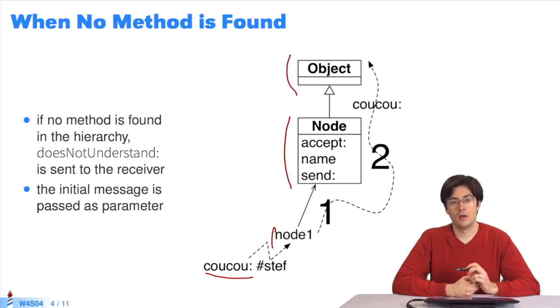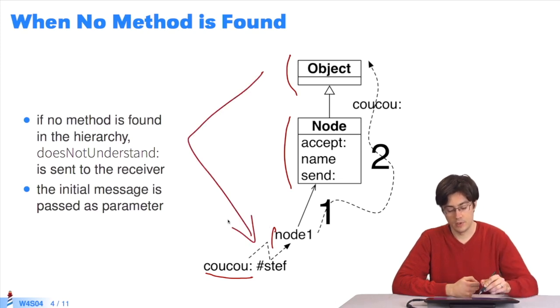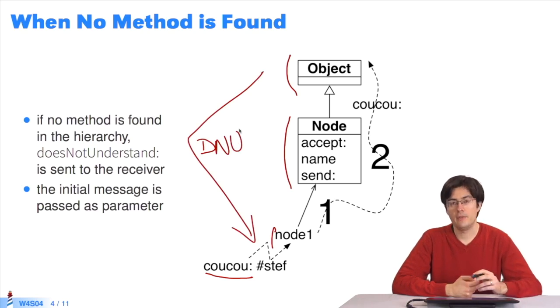the Pharo Virtual Machine sends a doesNotUnderstand message to the receiver, Node1. DNU equals doesNotUnderstand. It transfers the initial message as a parameter. This is the parameter, cuckoo #stef.